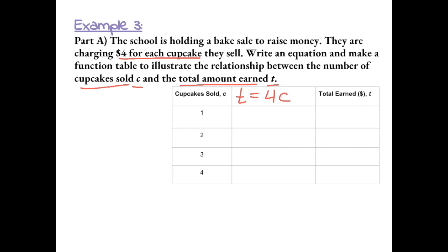Now for a function table, we can use 1, 2, 3, and 4 as input values. If we sold 1 cupcake at $4 each, they would have earned $4. If we sell 2 cupcakes at $4 each, they'd earn $8.